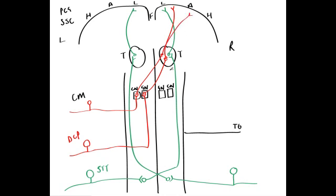Here we have the dorsal column pathway in red from the left-hand side. It's important to remember: spinothalamic fibres cross at the level of the spinal cord, while dorsal column fibres cross at the level of the closed medulla.